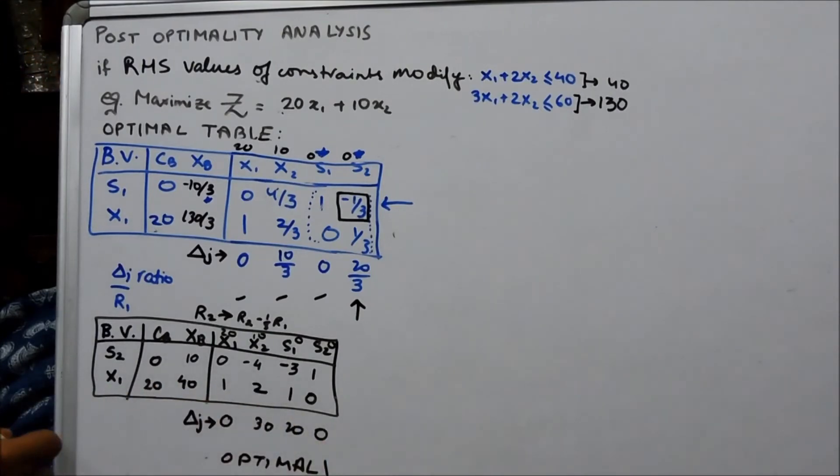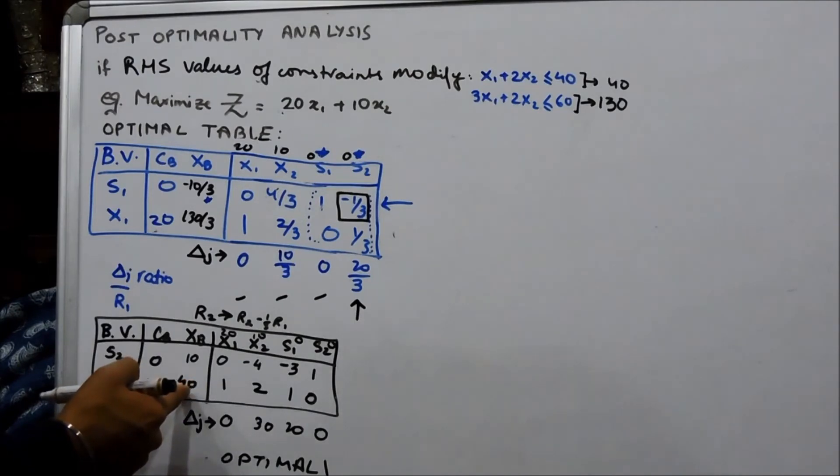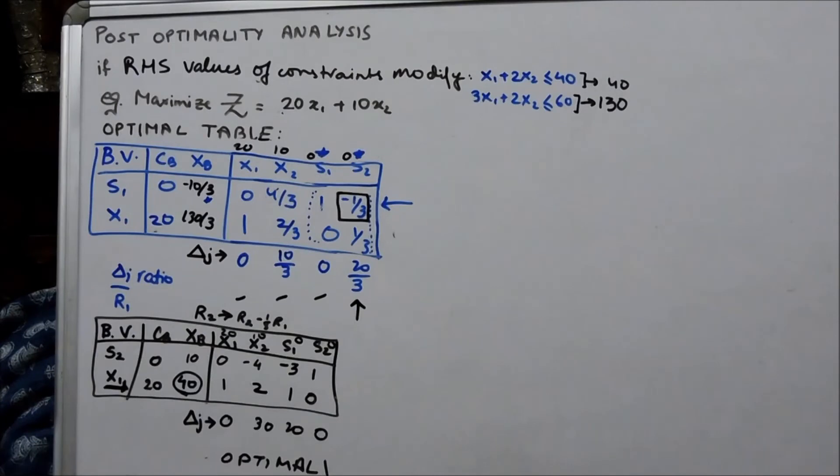So, the final optimal answer becomes, answer becomes 10 and 40 with the S2 in the basis variable. So, what happens is, X1 becomes the basis matrix and the answer is 40. So, this is what happens in a nutshell.